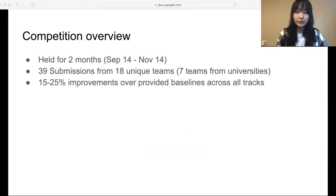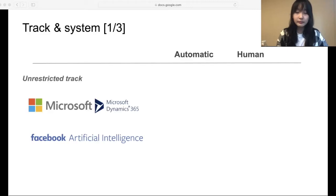The competition was held for two months. 39 submissions from 18 unique teams were submitted, and seven of them are affiliated or co-affiliated with universities. The system achieved impressive results, achieving 15 to 25 point improvement over baseline across all tracks. Now, we will go over each of the tracks and the description of the top submissions. The first track is unlimited track, where there is no constraint in memory, and the system should achieve the highest accuracy. We will watch the description of the top two systems based on automatic eval, one from Microsoft and Dynamics 365, and the other from Facebook AI.